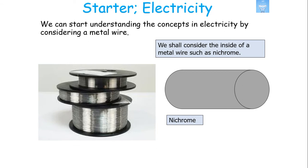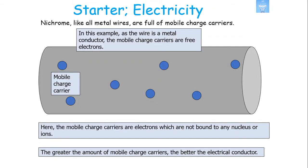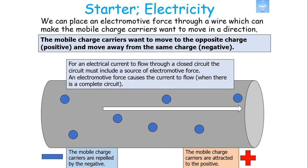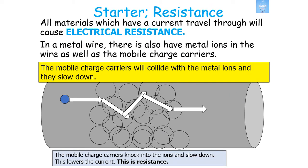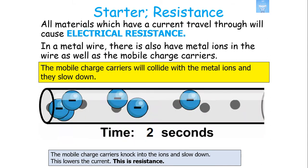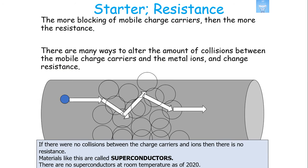Let's look at a metal wire — now considering nichrome. An EMF source allows mobile charge carriers to move in a current. As those mobile charge carriers move through the wire, they collide with the metal ions of the wire and slow down, lowering the current. This is electrical resistance, caused by the metal ions in the wire. Ion–charge carrier collisions slow the rate of mobile charge carrier movement, providing resistance.